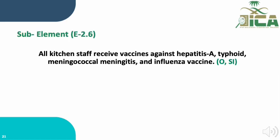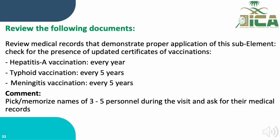Sub-element E.2.6 states that all kitchen staff receive vaccines against hepatitis A, typhoid, meningococcal meningitis, and influenza. We review medical records demonstrating proper application by checking for updated vaccination certificates: hepatitis A every year, typhoid every five years, and meningitis every five years. We can pick three to five healthcare workers during the visit and request their medical records to verify implementation.